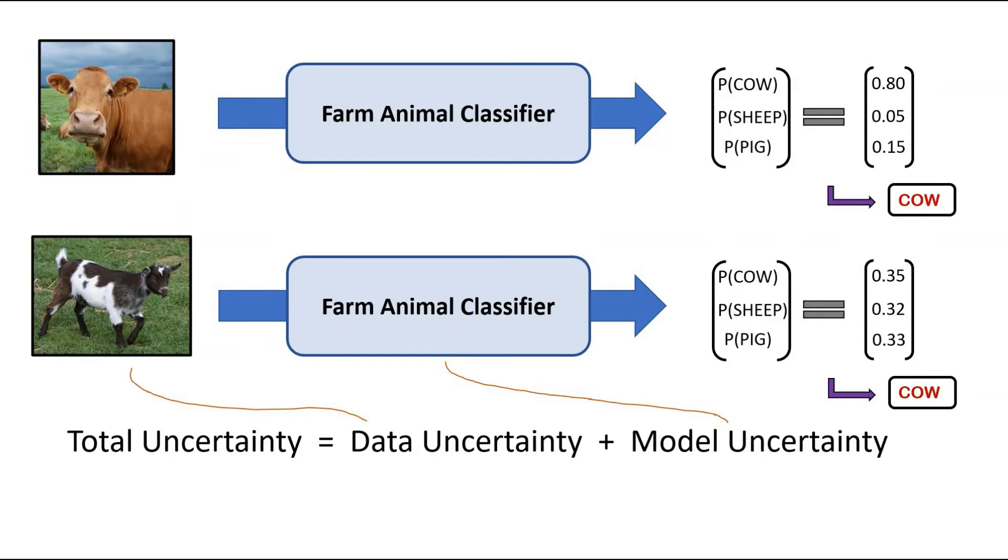So what we are interested in here is finding out how much data uncertainty and model uncertainty contribute to the total uncertainty of the prediction. In order to understand how we can find data and model uncertainties, we need to visualize the predicted probability distribution a little better.